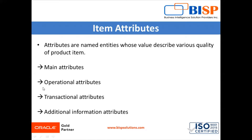The first type is main attributes. Main attributes are common to all the items we create or that are already created in our instance, and they are part of the item data model. Main attributes describe essential aspects of our item — for example, attributes like item number, description, item status, lifecycle phases, user item type, approval status, item classes, and unit of measures.